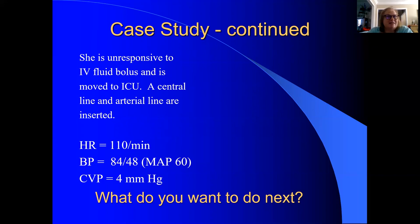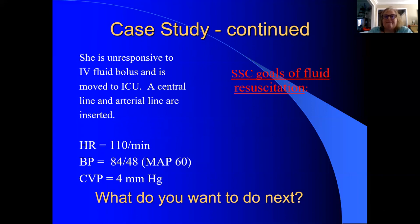Central venous pressure — measured now because we've got a central line — is four millimeters of mercury. That's too low; we're looking at eight to twelve. So she is still tachycardic, still hypotensive, and the central venous pressure tells us she remains significantly hypovolemic.